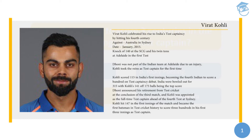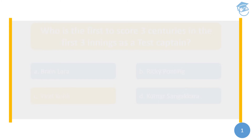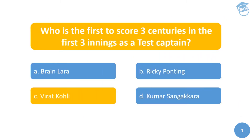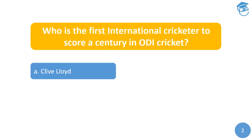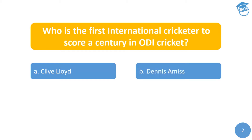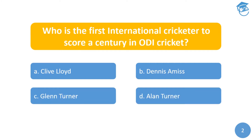Kohli is making records after records. Let's move on to the second question of the day: who is the first international cricketer to score a century in ODI cricket? Your options are A) Clive Lloyd, B) Dennis Amiss, C) Glenn Turner, or D) Alan Turner.